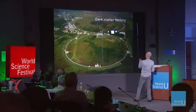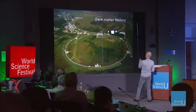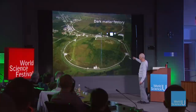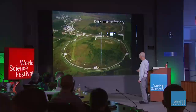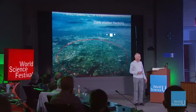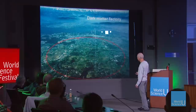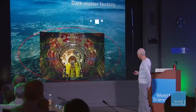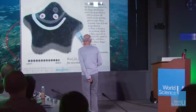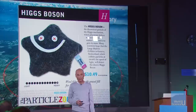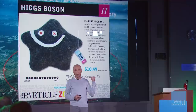Number one: particle accelerators can change energy for matter. This is the Fermilab accelerator — we think of them as dark matter factories. The Europeans built a bigger one — the Large Hadron Collider in Geneva. They make big collisions and big particle detectors. They built a $20 billion accelerator and all they discovered is a Higgs boson — what I want is dark matter particles.